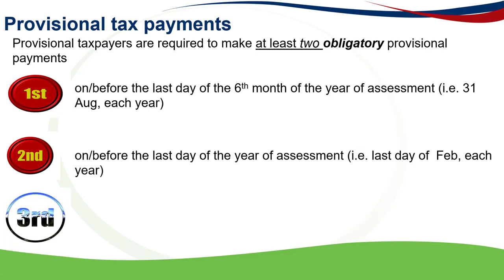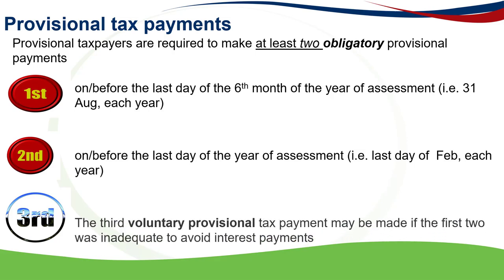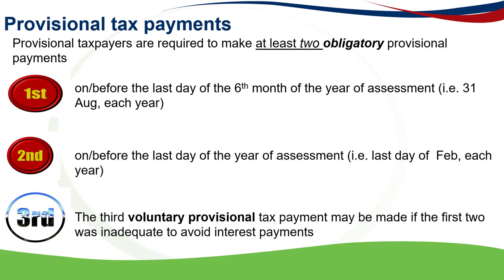The third payment is voluntary and it may be made if the first two payments were inadequate, and this is to avoid interest payments. The first and second provisional tax payments are obligatory, and the third provisional tax payment is only to be made if the first and second payments were not adequate.